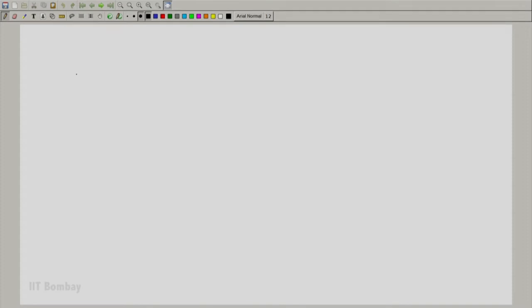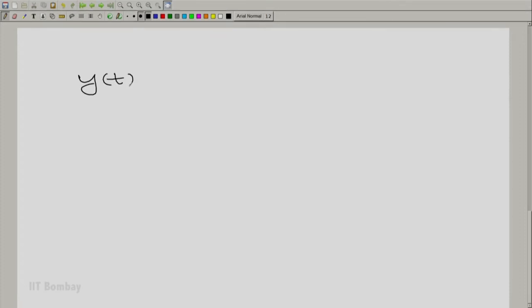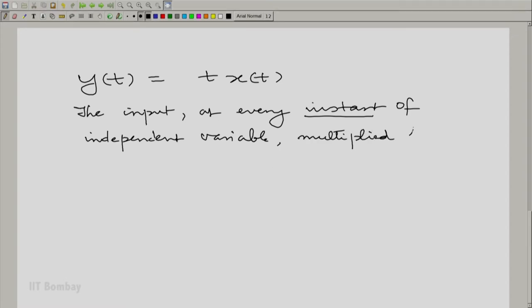Notice again that the fact that you had essentially a linear combination or a sum of inputs taken at different times gave you a homogeneous system. This is one sure shot way of creating a homogeneous system. In fact, this kind of construct will be useful to us in many contexts as we will slowly see when we proceed through the course. But for the moment, let me introduce one more new example here before we take the third example. Let me take the example of the system y(t) = t × x(t). What it means is the input is multiplied at every instant.